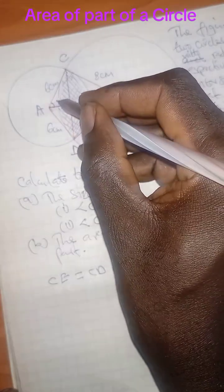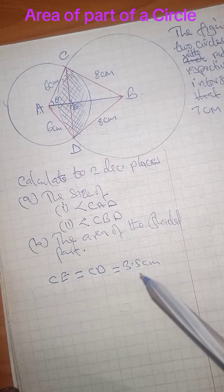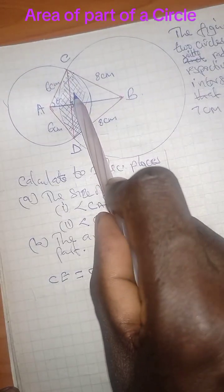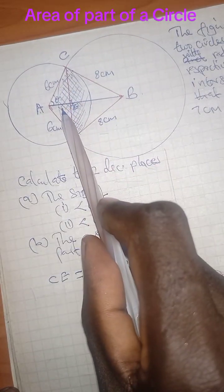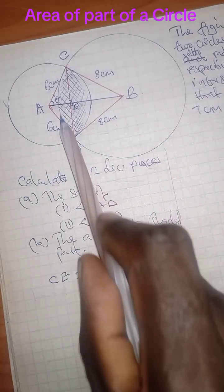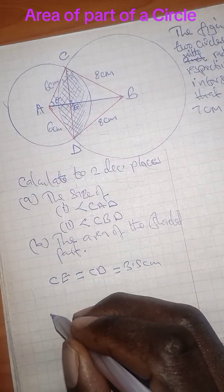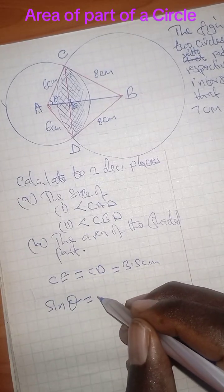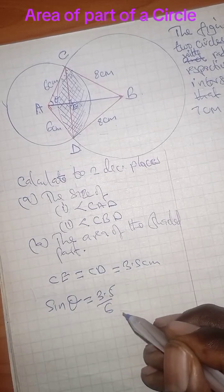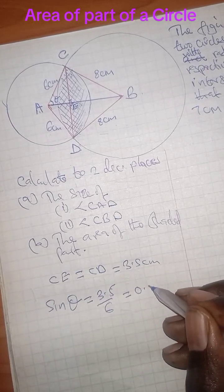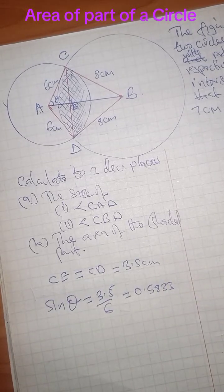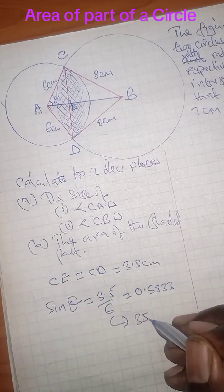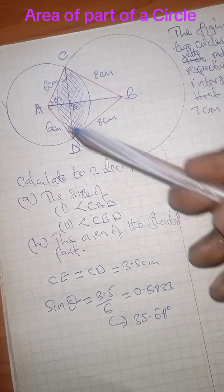Now, this angle we can call it angle theta. We have the hypotenuse, we have the opposite side. We can find this angle using sine. Sine theta is equal to the opposite side which is 3.5 and then the hypotenuse which is 6. This gives us 0.5833. Read this from the tables. You get that this angle is equal to 35.68 to two decimal places.